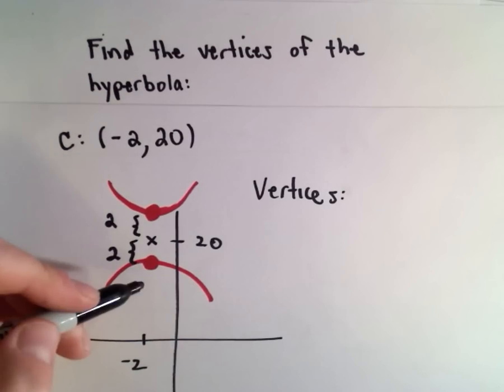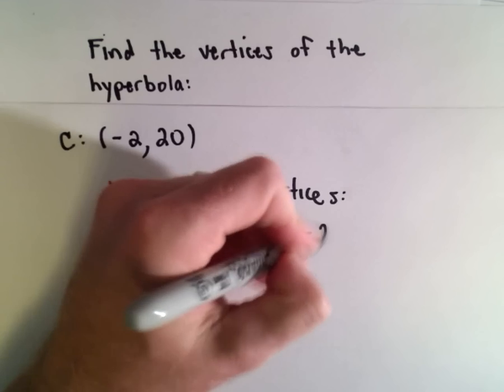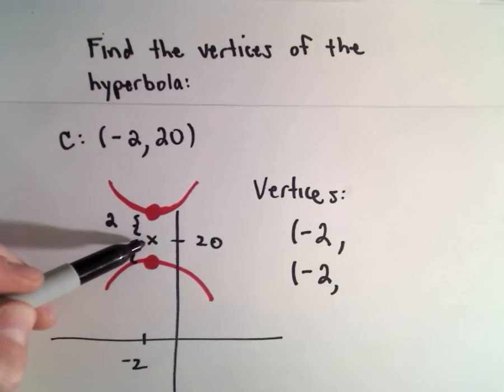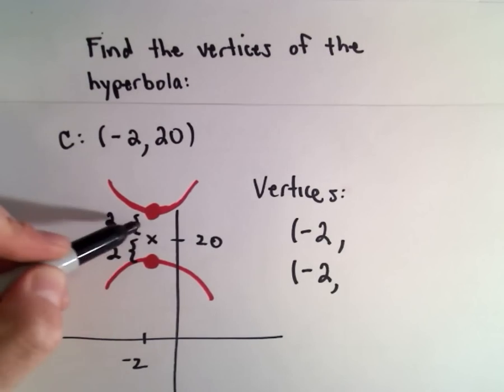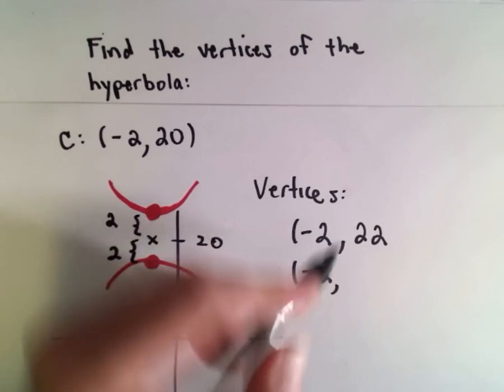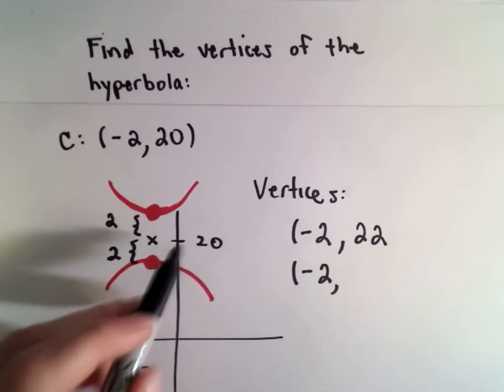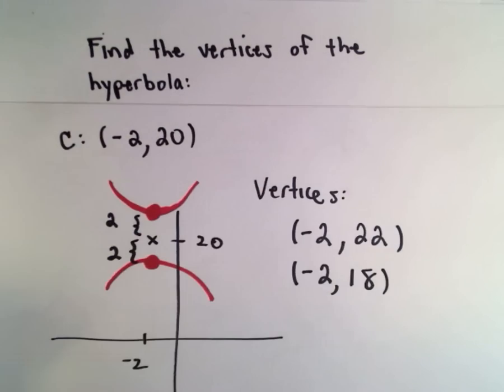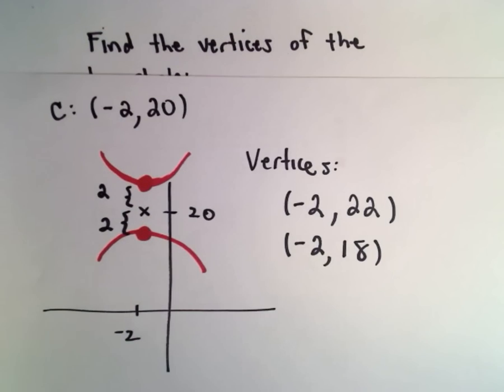Okay, so since the x coordinate doesn't change, that'll just remain negative 2. It was originally centered at negative 2 comma 20. So if we move up two units, we'll be at negative 2 comma 22. And if we move down, we'll be at negative 2 comma 18. And those will be our vertices.